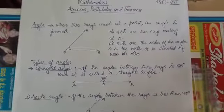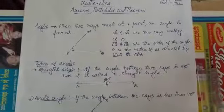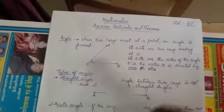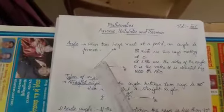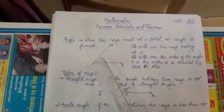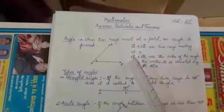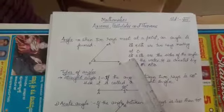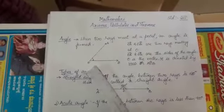When two rays meet at a point, an angle is formed. So if OA and OB are the two rays meeting at O, then AOB is the angle formed. Here OA and OB are called the arms or sides of the angle, and O is called the vertex of the angle.